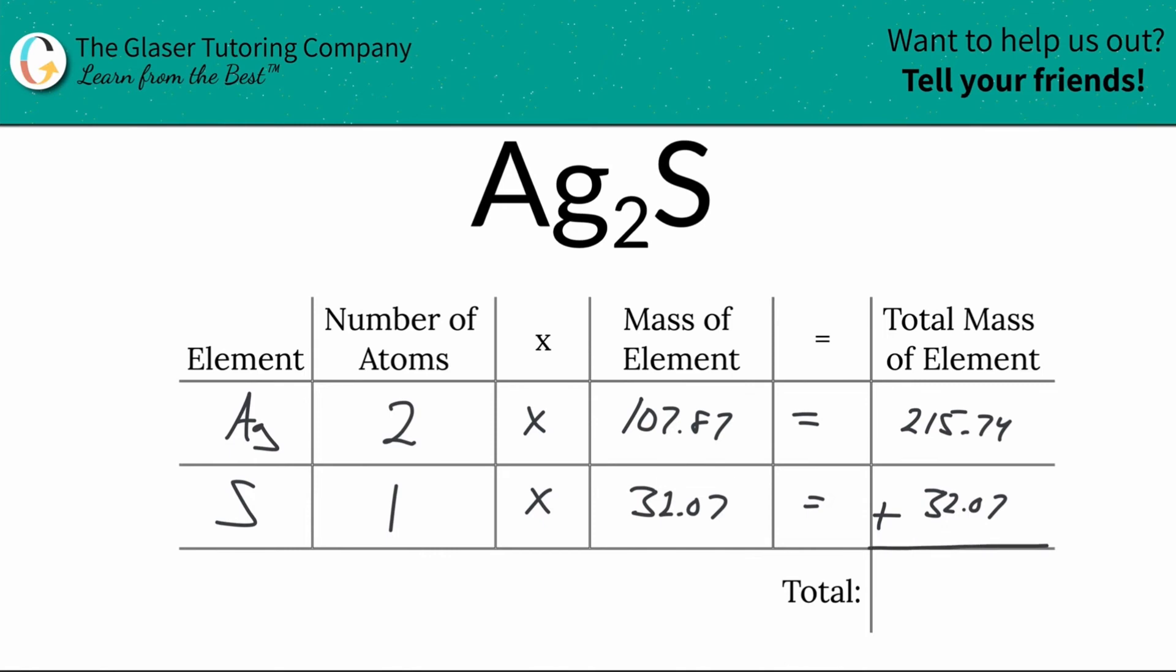And then what we're going to do is add those total masses together to find the total mass of the entire compound. When we add those values together, we get about 247.81. Now if you're solving for molar mass, the units here are grams per mole.